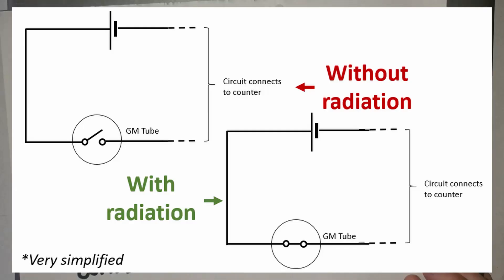So essentially the whole device is a circuit and the Geiger-Müller tube is a switch. When there's no radiation the switch is off. When there is radiation the switch is on.